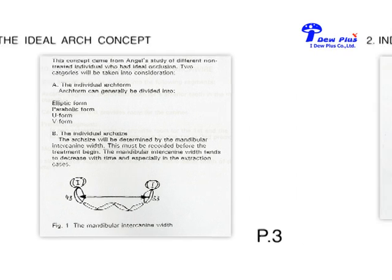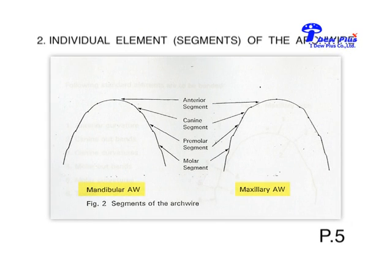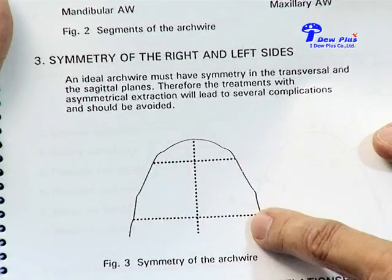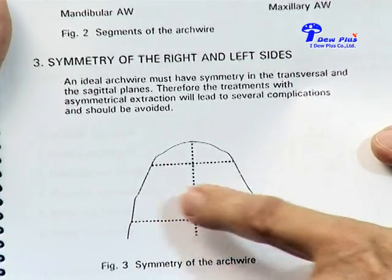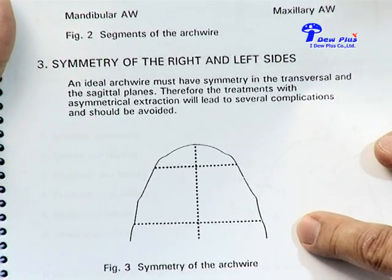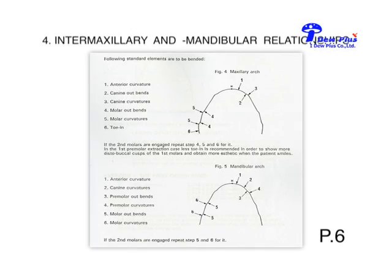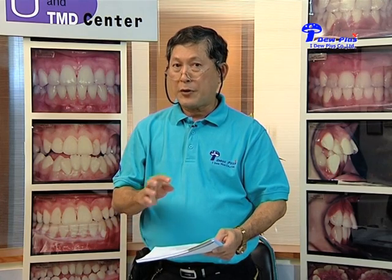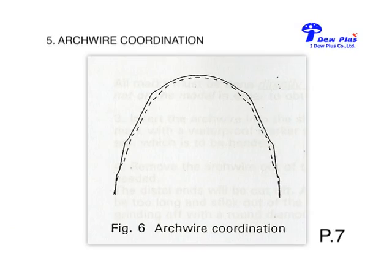Page number five shows the maxillary arch wire and the mandibular arch wire. Today we do not bend all of those elements — we put a lot of bends into the bracket. The bracket I use is the Alexander Modified Setup. Number three, a key point is the symmetry of the right and left sides of the arch; we must have symmetry at every level of the arch. Number four is the intermaxillary and mandibular relationship. Number five is arch wire coordination: after the maxillary and mandibular arch wires are bent, they are put together to evaluate their relationship, as seen on page number seven.